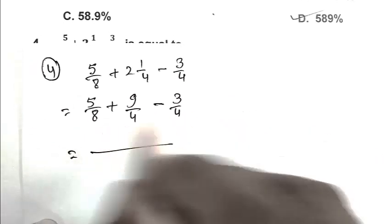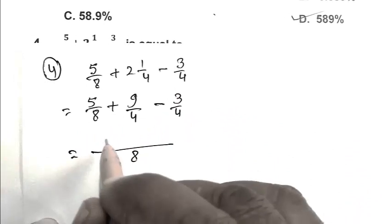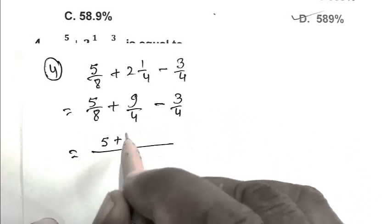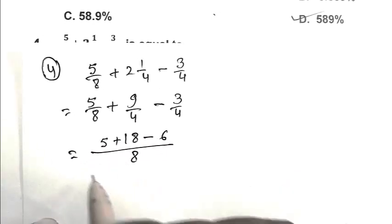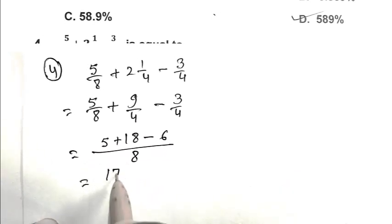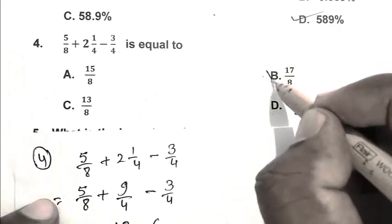Taking LCM of 8, we get 5 plus 18 minus 6, which equals 17 upon 8. B is the right answer.